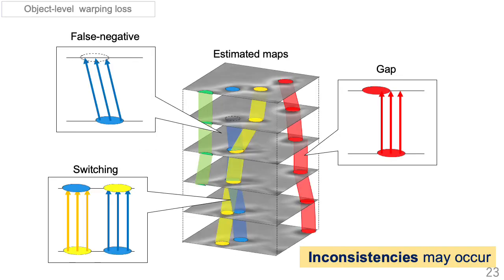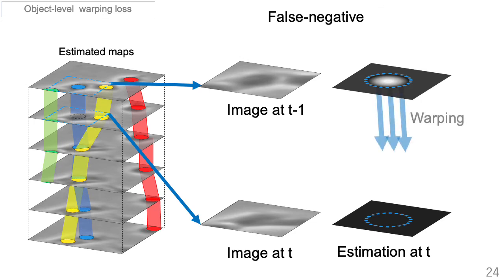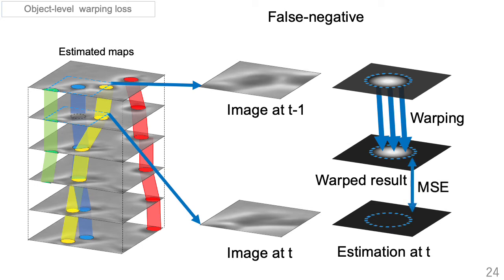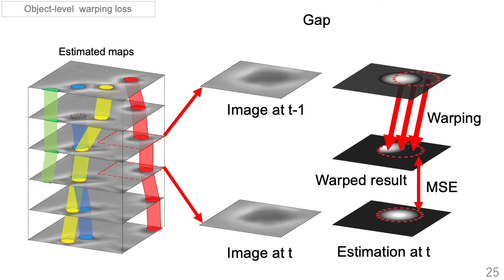In this estimation, inconsistencies may sometimes occur due to gaps, false negatives, or switching. Object level warping loss penalizes these inconsistencies. First, the estimation result at t-1 is warped from t-1 to t using the estimated motion. Then, MSE is calculated between the warped result and the estimation result at t. In this example, the cell is detected at frame t-1 but not detected at frame t — this is a false negative. The warping loss penalizes such non-detected cells. If the estimation results have a gap between frames, the results are also penalized. The switching problem can also be solved by warping loss.